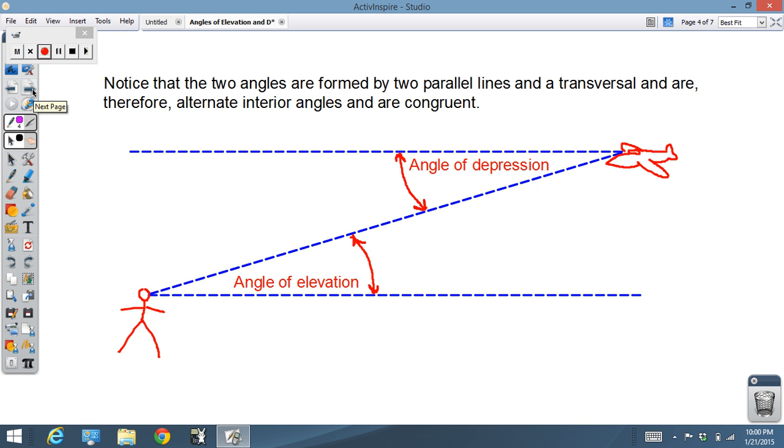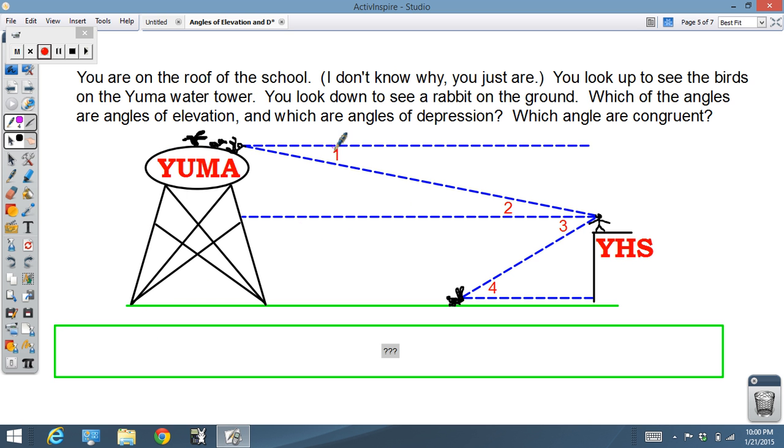Now what kind of problems go with this kind of thing? Here we go. You're on the roof of the school. I don't know why, you just are. You look up on the top of the Yuma Tower, you see these cute birds. So you look up from Yuma High School to see the birds. You look down and you see a rabbit. Now tell me, which of these four angles - 1, 2, 3, 4 - is an angle of elevation? Which are angles of depression? And which angles are congruent?